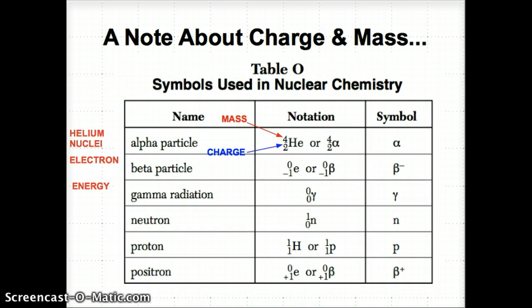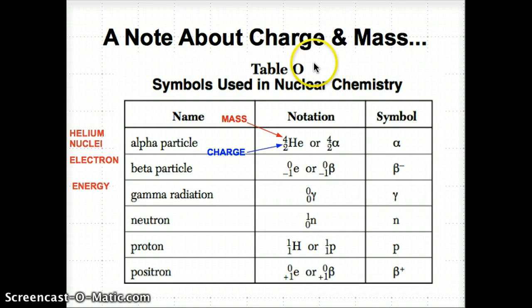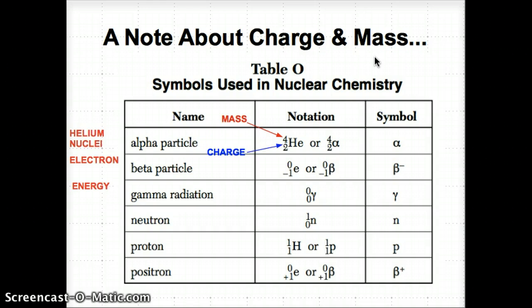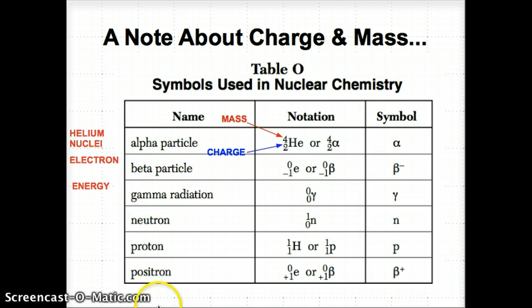Now that we've gone over nuclear stability, let's talk about the charge and mass of different types of particles that will actually come out of an unstable nucleus. This will be useful when we learn about emissions. Let's go to Table O, which says 'Symbols Used in Nuclear Chemistry' — use this table from the reference tables to go over different parts of the notations.